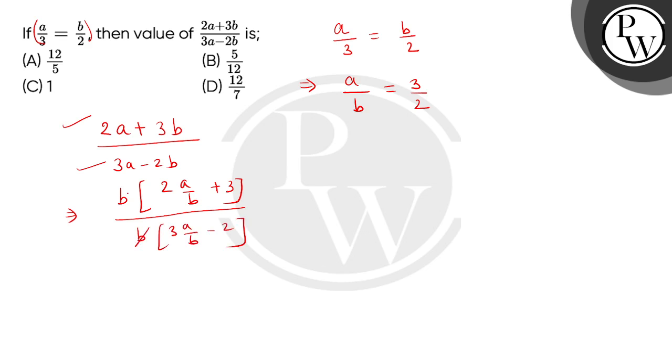Now, b b cancel, and we put a by b value, 3 by 2. So, numerator will be 2 multiplied by 3 by 2 plus 3, and denominator is 3 multiplied by 3 by 2 minus 2.